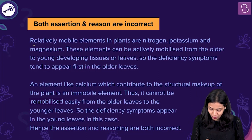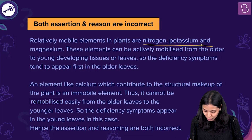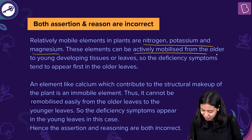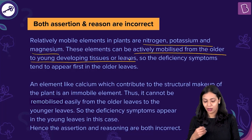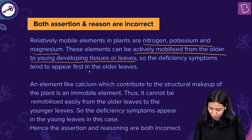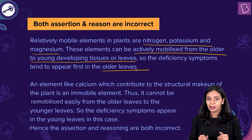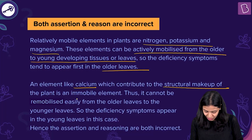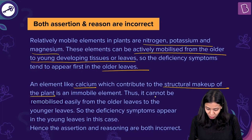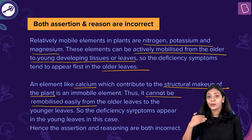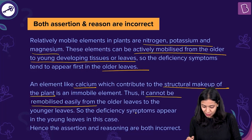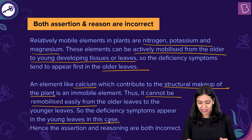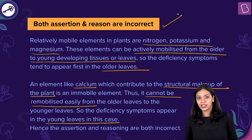To summarize: relatively mobile elements in plants include nitrogen, potassium, and magnesium. They can be actively mobilized from older to young developing tissues, so deficiency symptoms tend to appear first in the older leaves. For immobile elements like calcium, which contribute to the structural makeup of the plant, remobilization from older to younger leaves is not possible, so deficiency symptoms appear in younger leaves first. Therefore, both the assertion and reason statements are incorrect and the correct answer is option D.